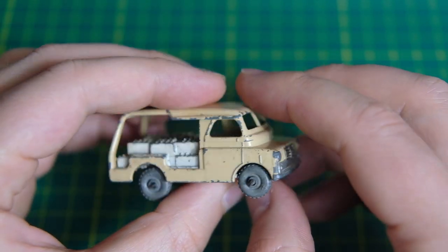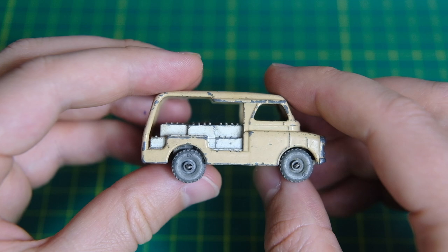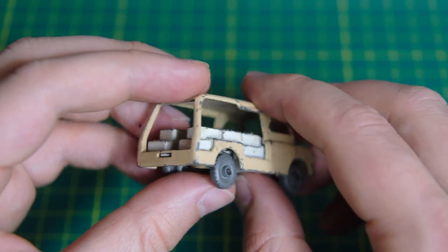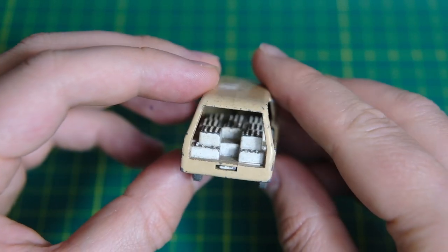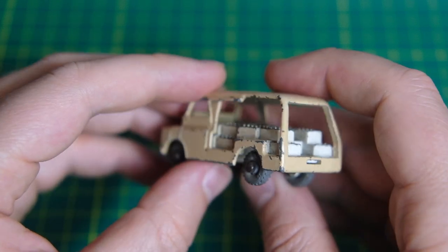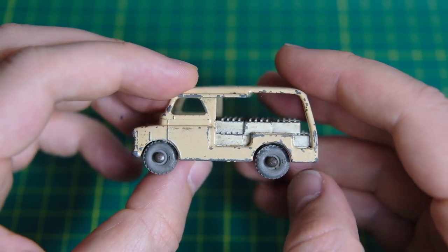Hello and welcome to Diecast Restos. I'm Jason and this is Lesney's 29A Bedford Milk Float which was in the Matchbox range from 1956 to 1961.